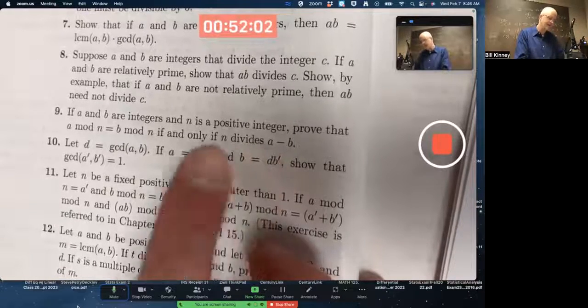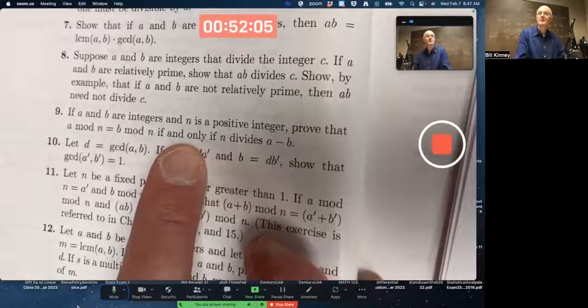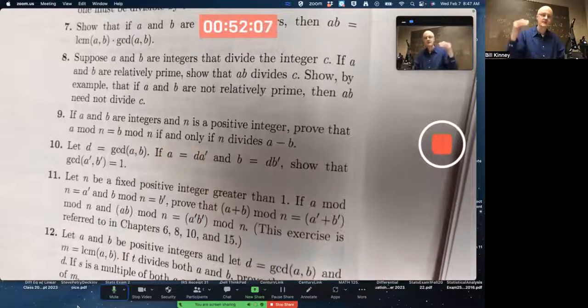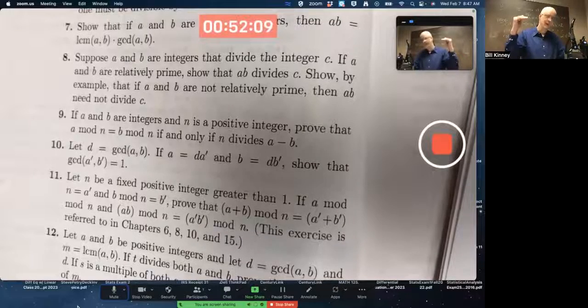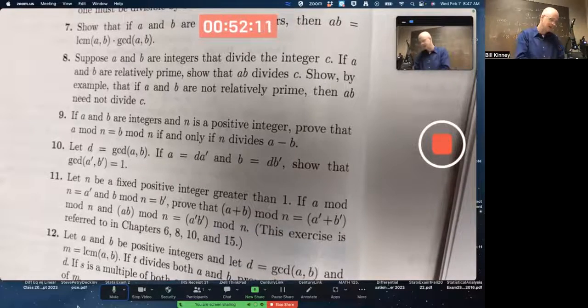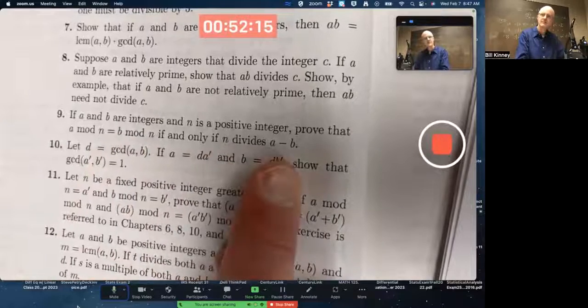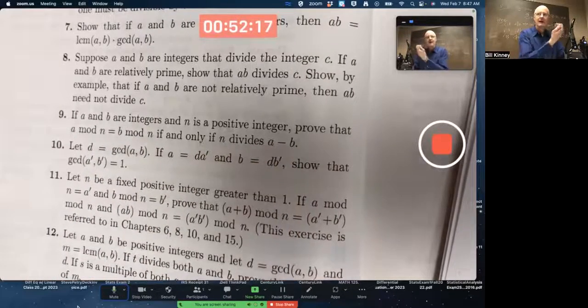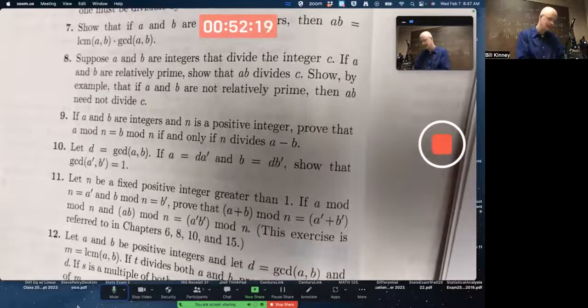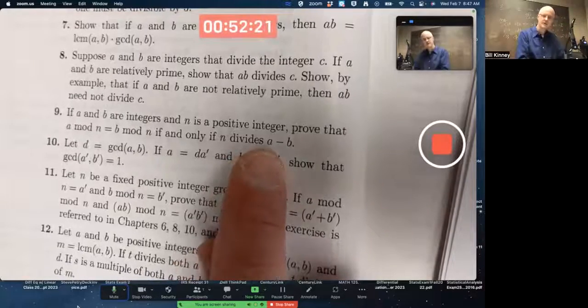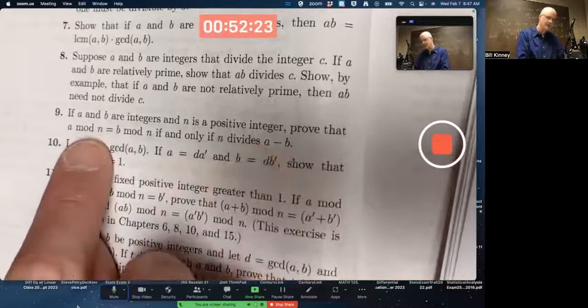First thing to realize, it's an if and only if. So there's two things to prove, two directions. The left to right direction, meaning if you assume this is true, then you need to show that's true. And the right to left direction, if you assume this is true, then you need to prove this is true.